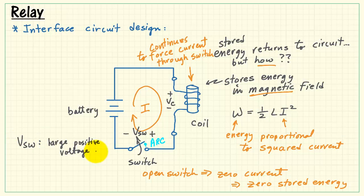Now the voltage of the switch would look like a large positive voltage, while the voltage across the coil would look like a large negative voltage. This is also known as back EMF. EMF means electromotive force.